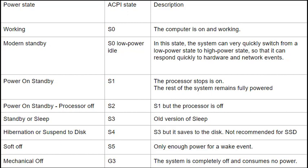For S5, or known as soft off, the system appears to be off. This state is comprised of a full shutdown and boot cycle. Most computers, when you turn it off, go to this mode. And then G3 is full power off. My focus for this video is keeping it on S0, S3, and turning it off.